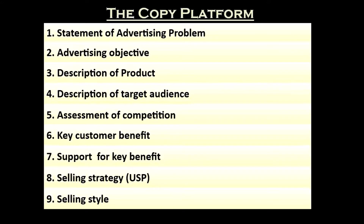The creative strategy is an outline prepared by the creative team of an ad agency that includes the copywriter, creative director, art director, and representatives from media planning and research. The creative strategy generally explains how the advertising campaign will meet the advertising objectives of the business. From the client side, the advertising manager, brand manager, or marketing manager approves the copy platform. Copy platform is also known as creative platform, work plan, creative brief, creative blueprint, or creative contract.